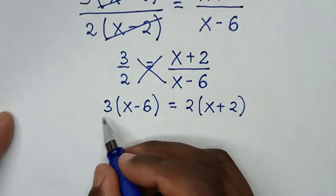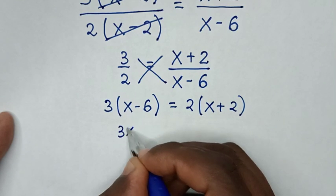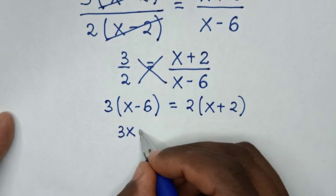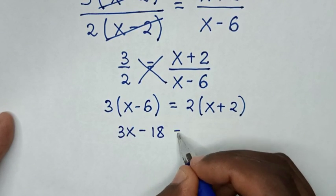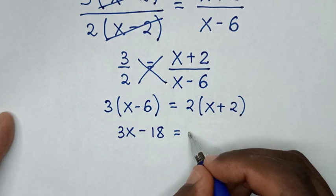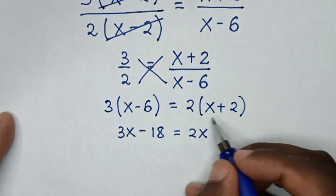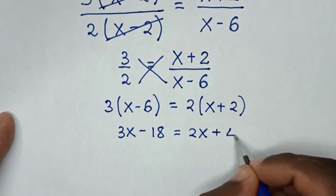So it will be 3 times x is 3x, 3 times negative 6 is negative 18, is equal to 2 times x is 2x, 2 times 2 is 4, so it will be plus 4.